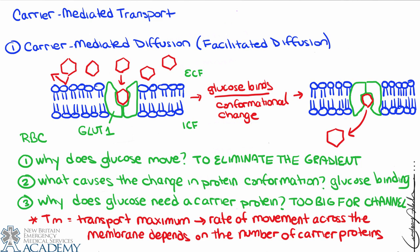That largely differentiates carrier-mediated diffusion from channel-mediated diffusion. In channel-mediated diffusion, running out of ion channels is less of an issue than it is with carrier-mediated transport. For simplified drawings, we can use the revolving door symbol, or just draw a single circle with an arrow to imply carrier-mediated diffusion. Carrier-mediated diffusion is a purely passive downhill process moving from high to low concentration.